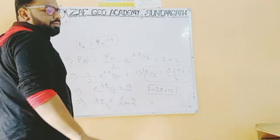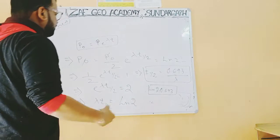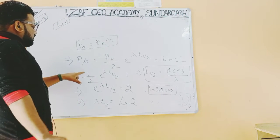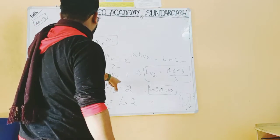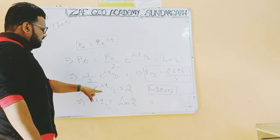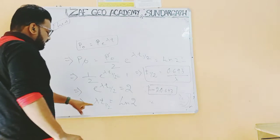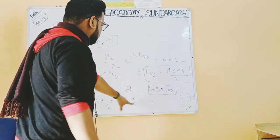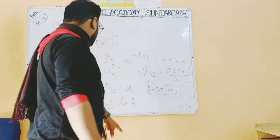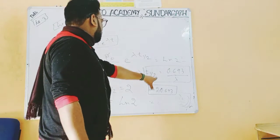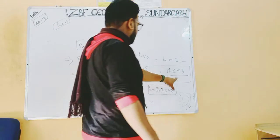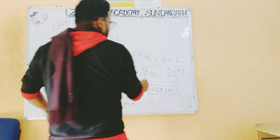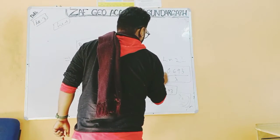In place of t we write t½ because we are calculating half life. Simplifying: e^(λ·t½) = 2, so λ·t½ = ln 2. The value of ln 2 is 0.693, therefore t½ = 0.693 / λ.